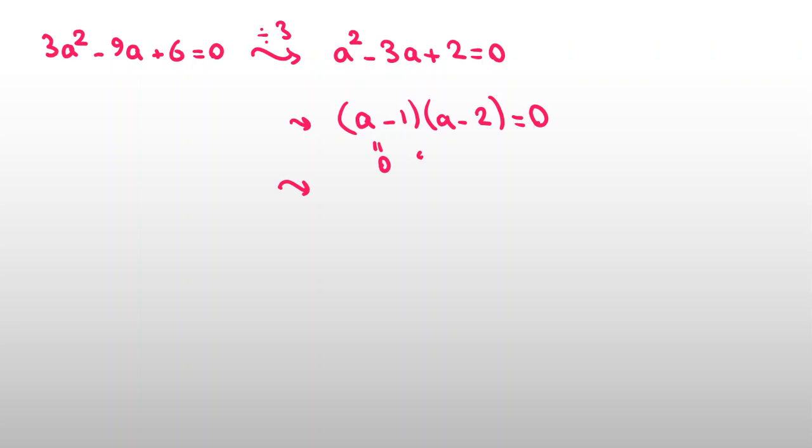So it is 0 or this part is 0. From this part, you conclude a is 1. From this part, you conclude a is 2.